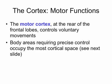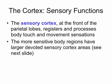We have what's called the motor cortex, which is at the back of the frontal lobe, and that controls voluntary movement. Body areas that require very precise control occupy the most cortical space.